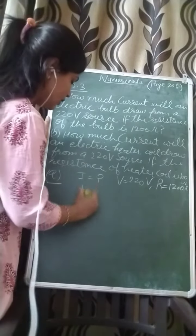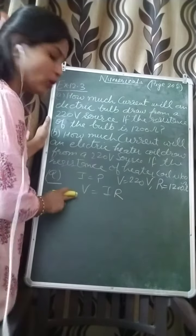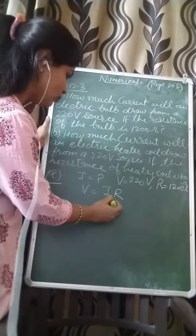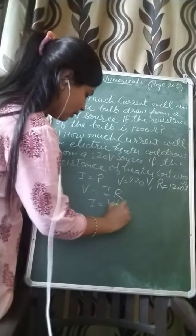You know that V is equal to IR. This is Ohm's law. V is equal to IR, and according to Ohm's law, then I is equal to V upon R.